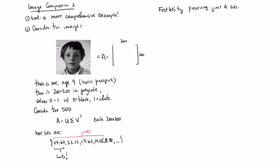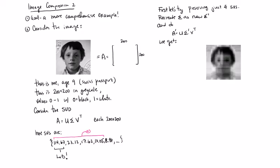So we'll recreate sigma as a new sigma prime and what we'll do is A prime is U sigma prime V transpose. This is what we get, following image. So this is a result, right? So it's not very good, but you can see sort of what's going on. You can see that it's a face, sort of alien.